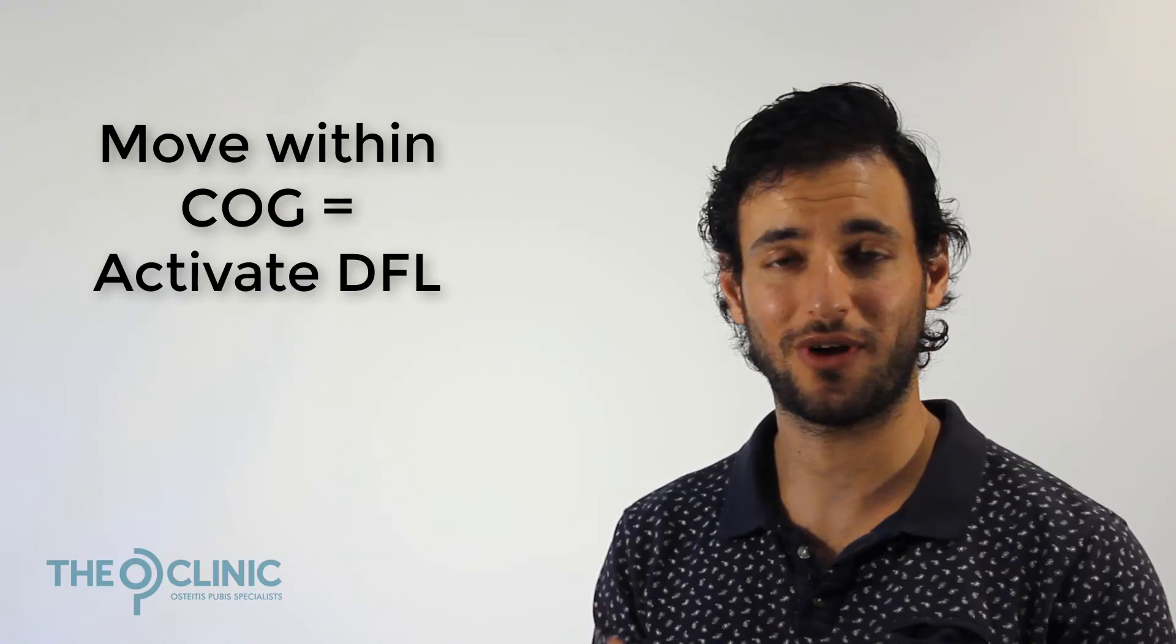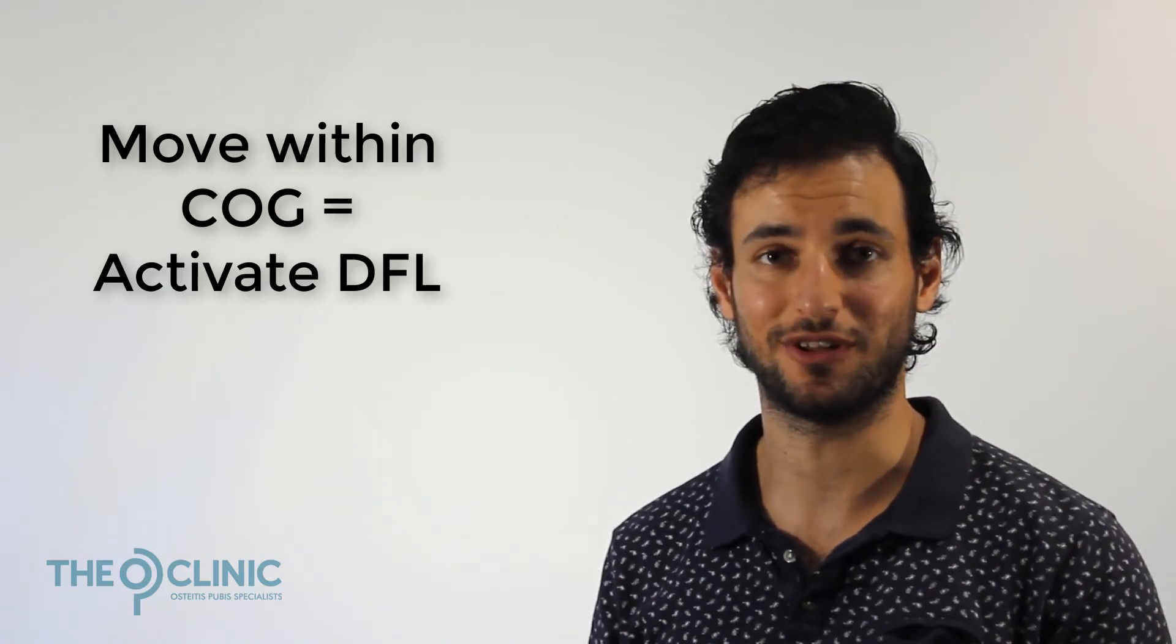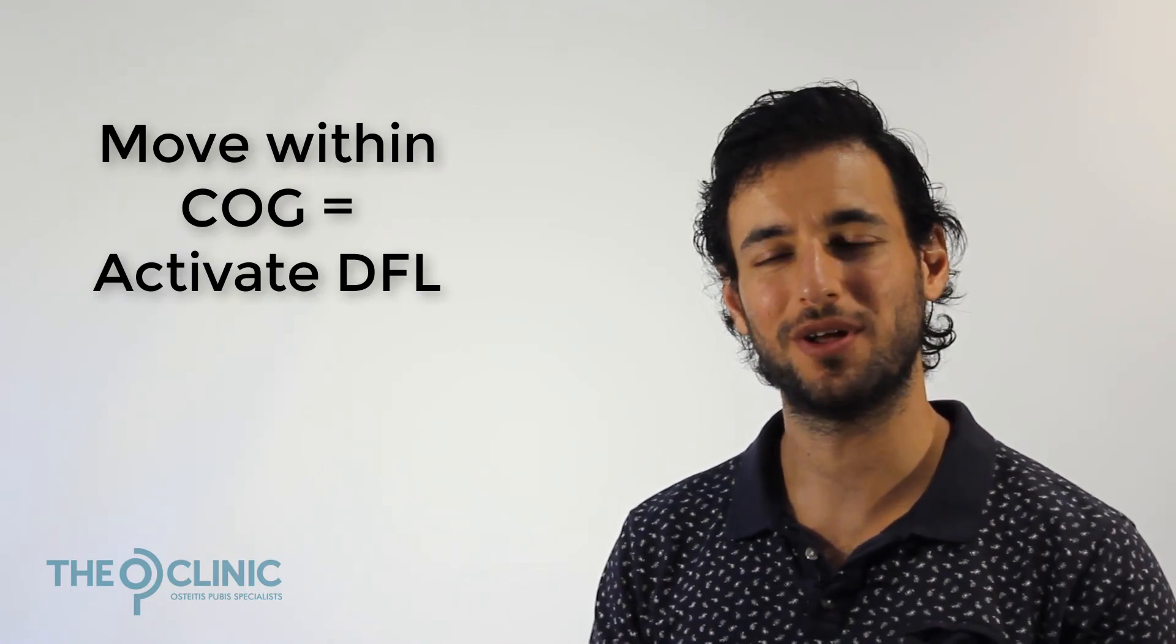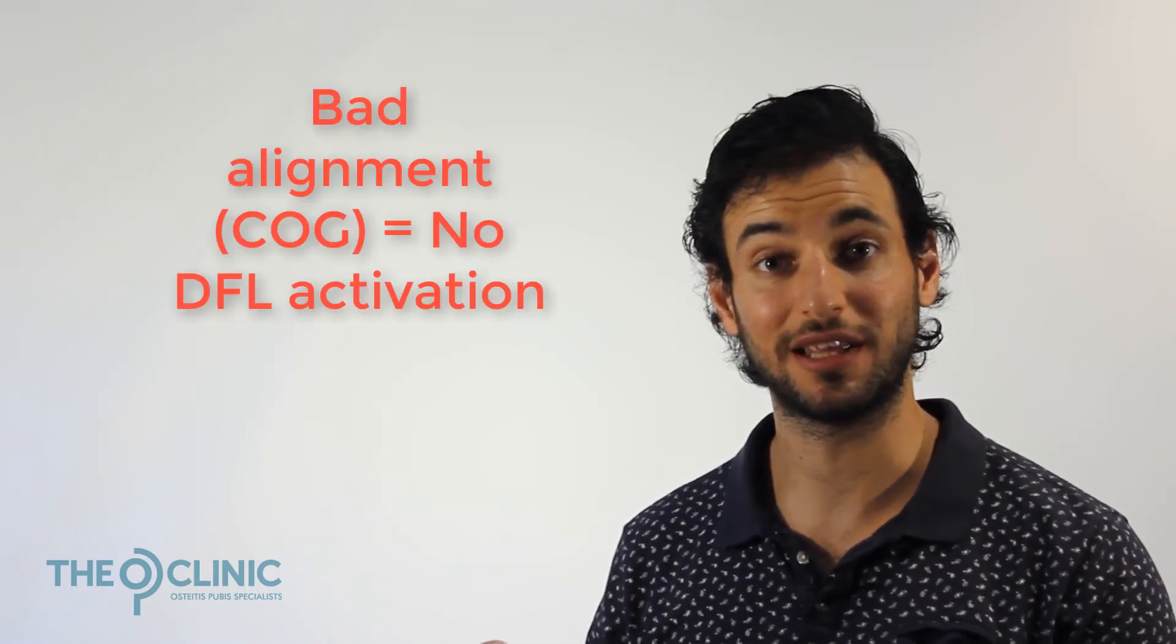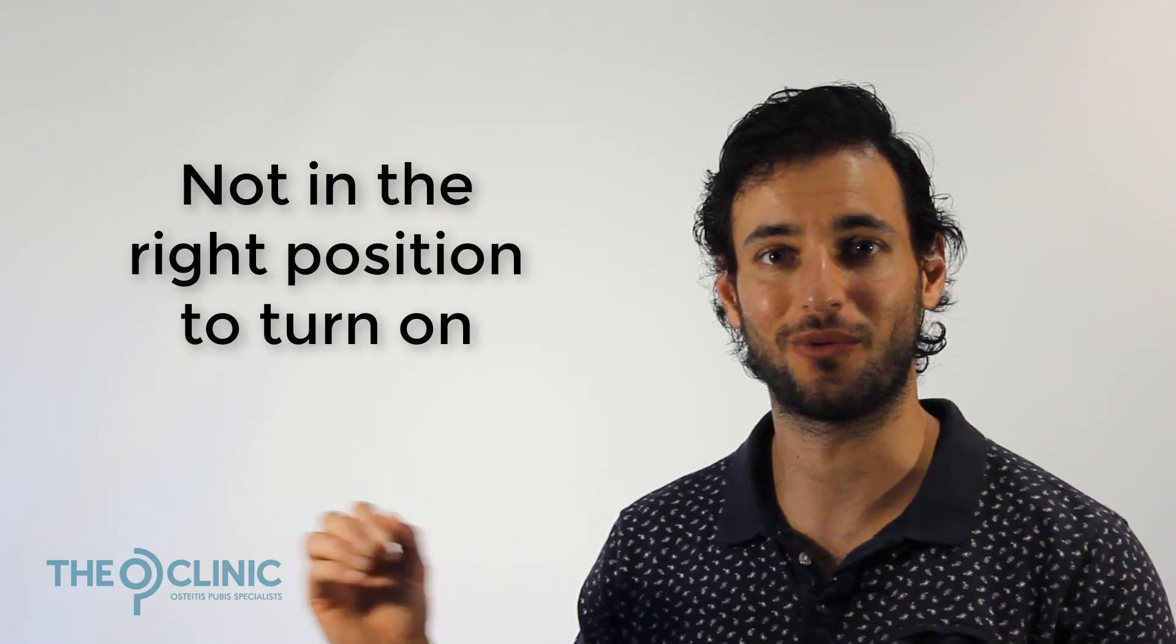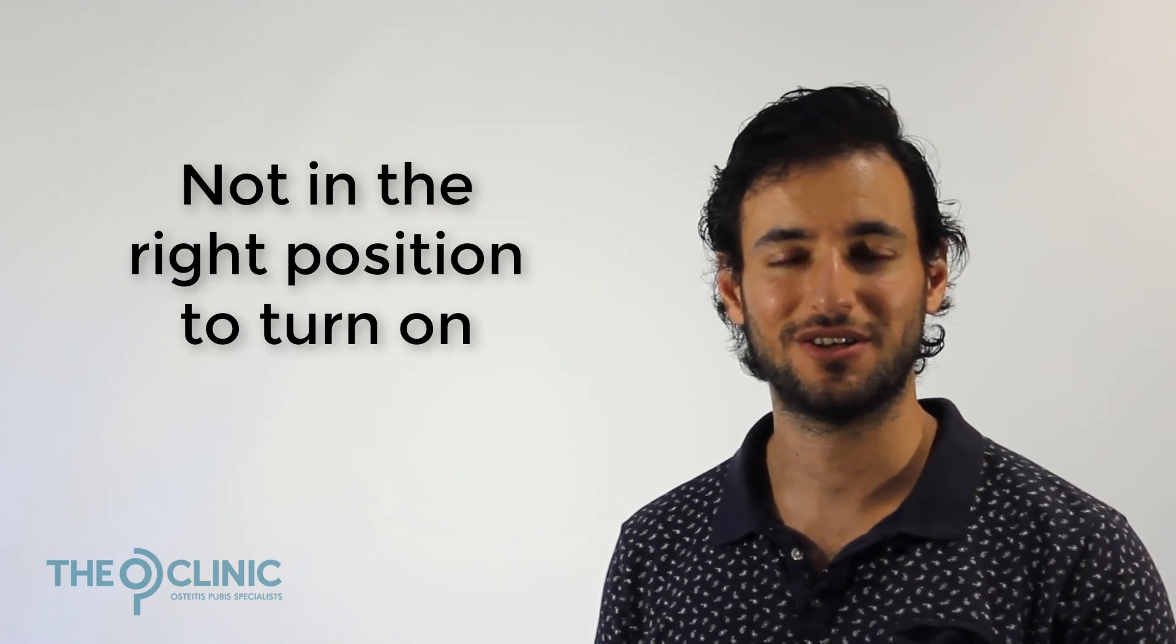So center of gravity math brings up a really interesting scenario here of chicken and the egg. When you move within your center of gravity, you activate your deep front line which allows your glutes and your core and everything to get active and hold you in good alignment. But when you're in bad alignment, it's really hard to activate your six functional systems and activate your deep front line. They're just simply not in the right position to turn on. So it's really hard to know exactly how and when to activate your deep front line. And the key to this is exercise technique. If you start a movement in good alignment, well then you're going to be able to switch on your deep front line and continue the movement in good alignment.